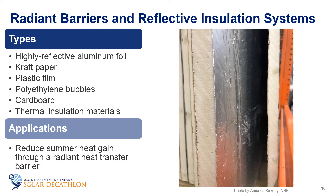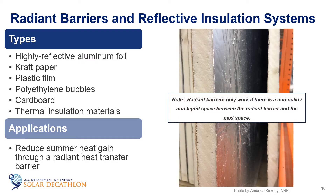Unlike most common insulation systems, which resist conductive and sometimes convective heat flow, radiant barriers and reflective insulation work by reflecting radiant heat. Radiant barriers are usually installed in attics, primarily to reduce summer heat gain, which helps lower cooling costs. Reflective insulation incorporates radiant barriers — typically highly reflective aluminum foils — into insulation systems that can include a variety of backings such as craft paper, plastic film, polyethylene bubbles, or cardboard, as well as thermal insulation materials.